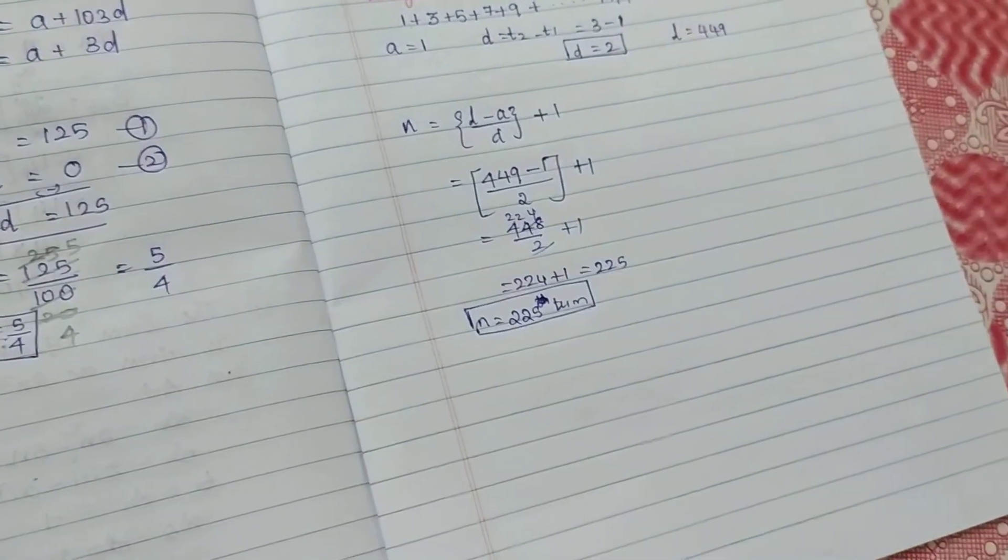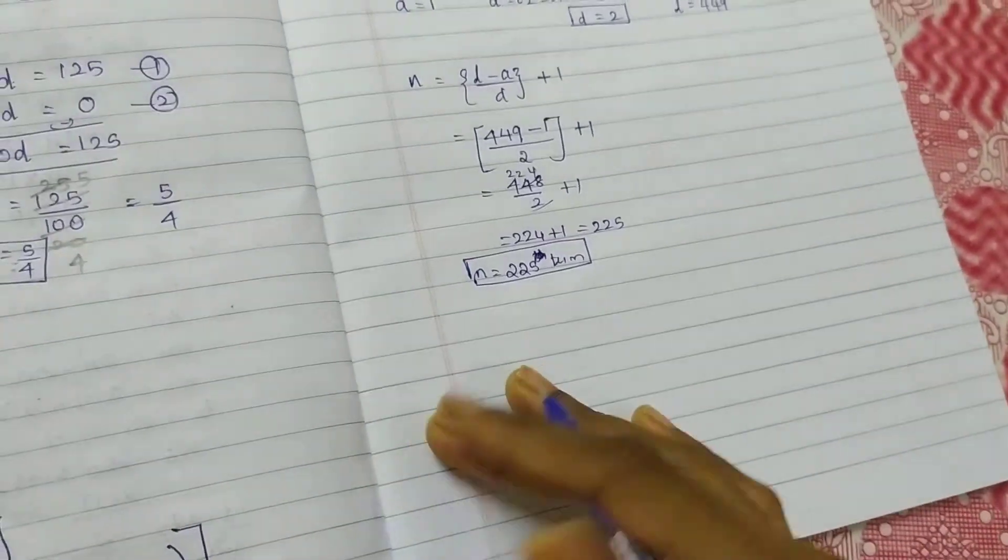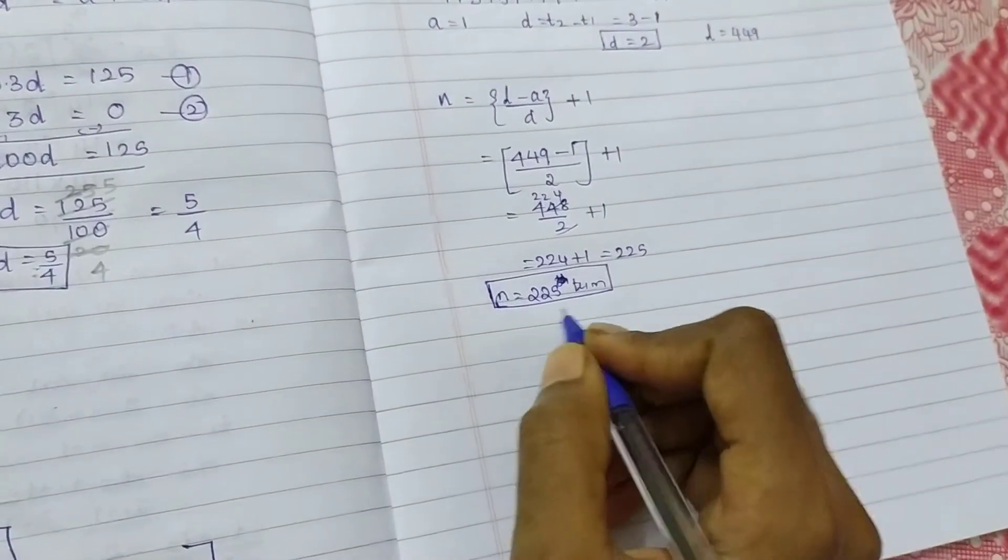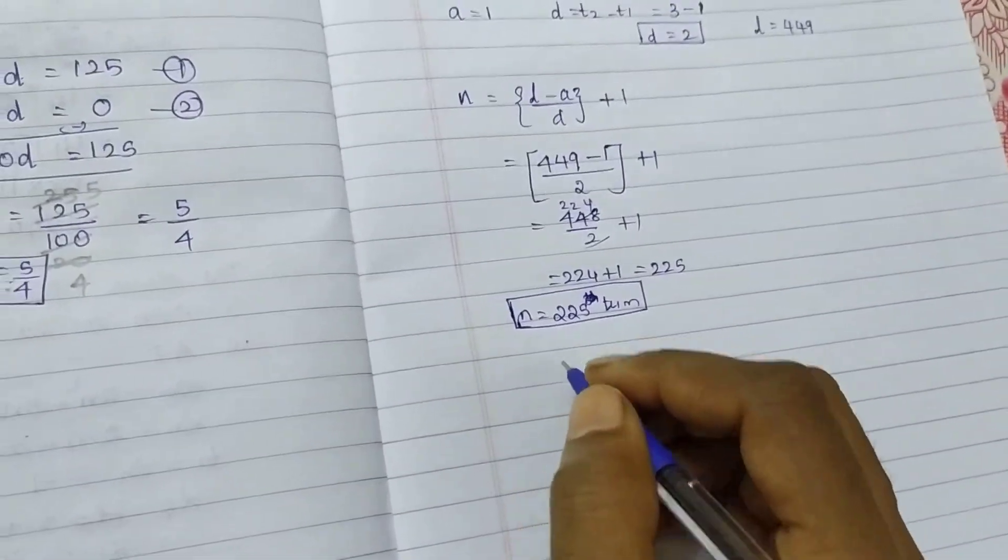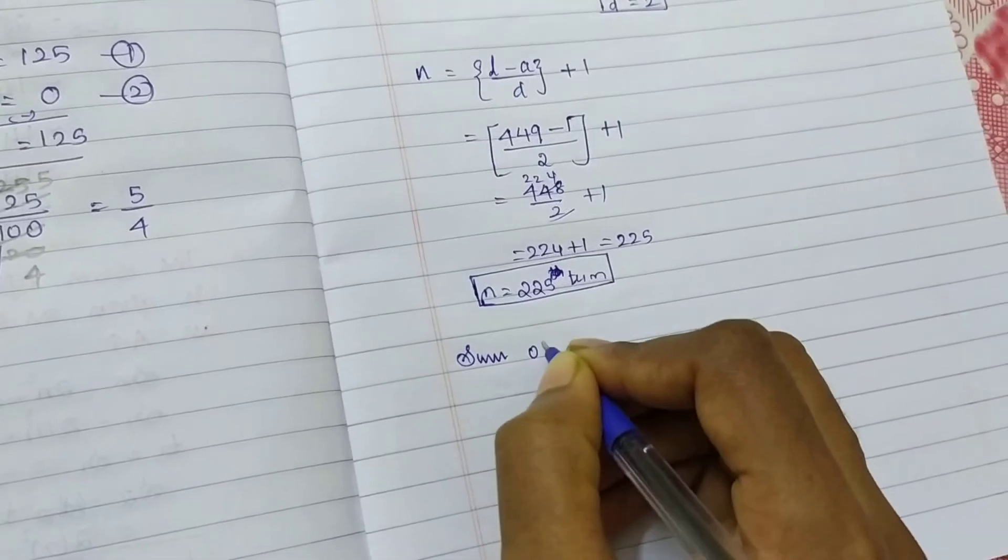225 terms we are having. So N is equal to 225, so sum of the 225 terms. In max we are having the formula, the easy way.